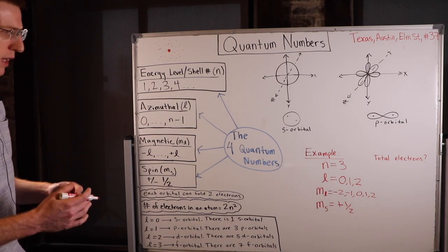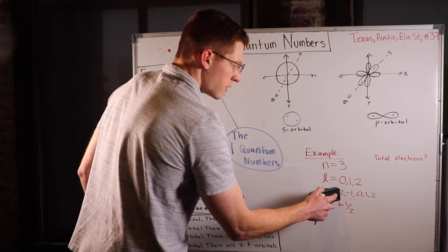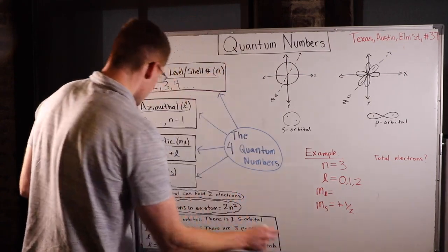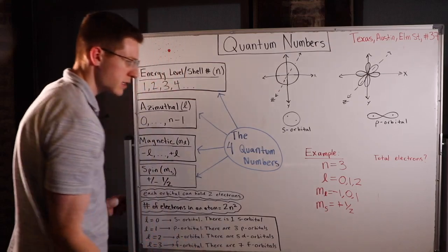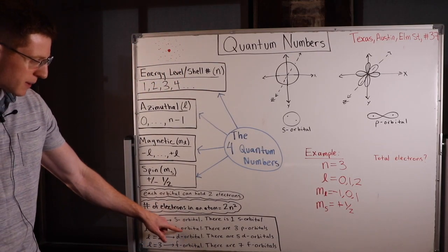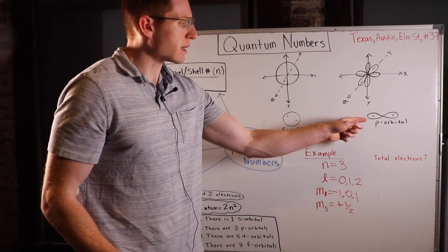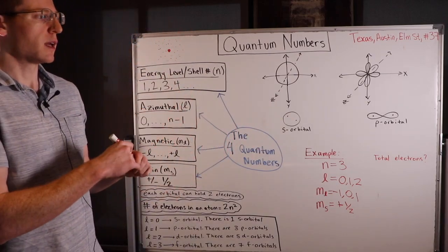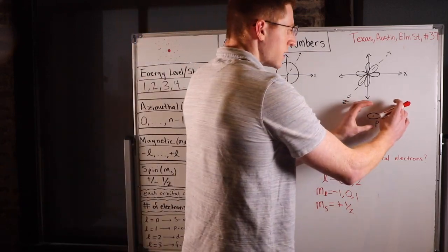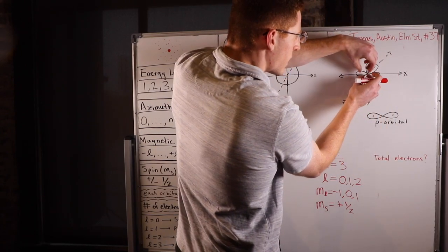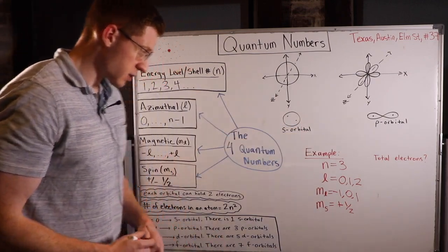Let me explain further. Instead of picking L equals 2, say we picked L equals 1. Then M sub L is only going to go from negative 1 to positive 1: negative 1, 0, and 1. That makes sense because L of 1 means we're at a p orbital, and there are 3 p orbitals. A p orbital looks like a dumbbell or an infinity symbol. You can imagine atoms are in three-dimensional space, so these clouds can be on the x-axis, the y-axis, or going in and out on the z-axis — three different ways to orient a p orbital.